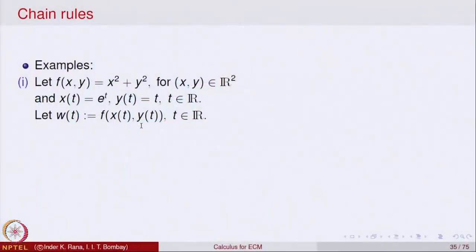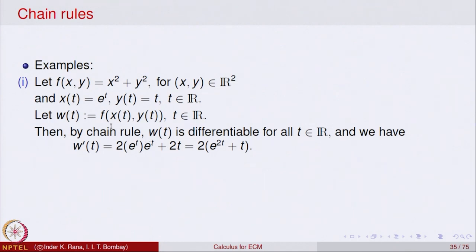Let us look at w(t) as the function f(x(t), y(t)). Here f is a function of x and y, x is a function of t, and y is a function of t. By chain rule, the derivative of w with respect to t is the partial derivative of f with respect to x times dx/dt, plus the partial derivative of f with respect to y times dy/dt.